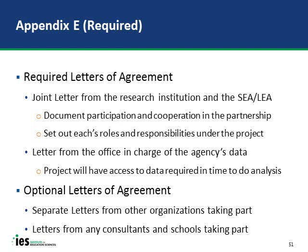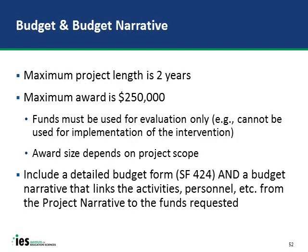You will write up a budget and budget narrative. The maximum project length is two years and the maximum award is $250,000. A reminder that grant funds can only be used for the evaluation—they cannot be used for implementing the intervention. You don't need to ask for $250,000 if the project can be done for less. Include a detailed budget form and a budget narrative that links to all areas of the budget form and describes how each area—personnel, evaluation, etc.—is being expended. If something is going on in the project narrative, there should be corresponding funding described in the budget narrative.